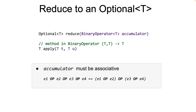So you can think about elements coming in from the stream and the binary operator is operating on these elements and then finally giving you a result. One important thing here is that the accumulator must be associative, meaning that the order in which the function is applied to the sequence does not matter. We will get to this soon.